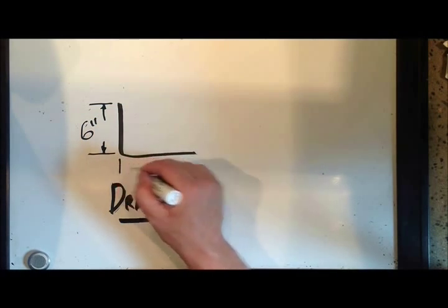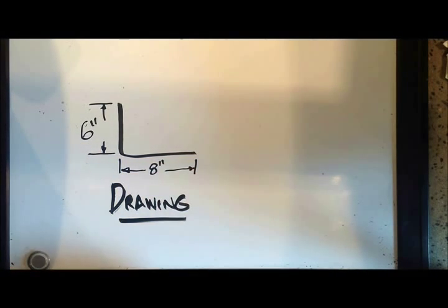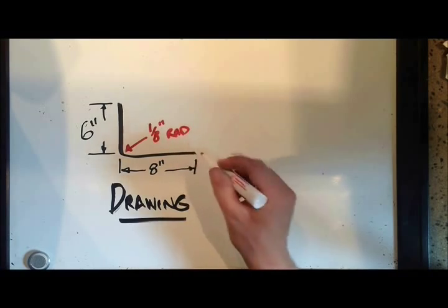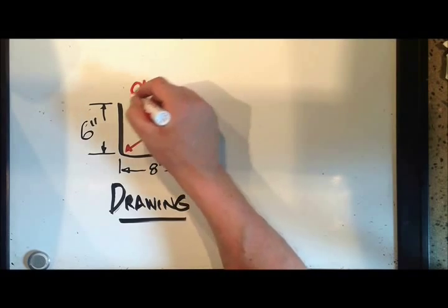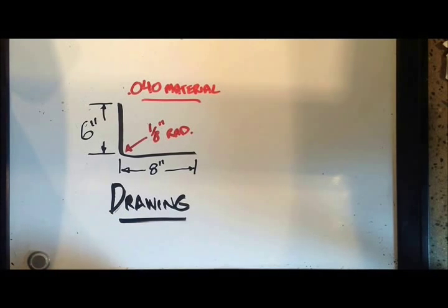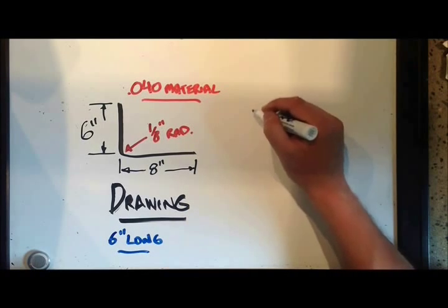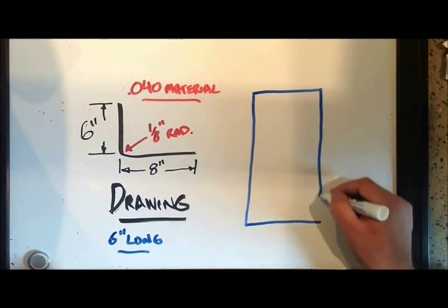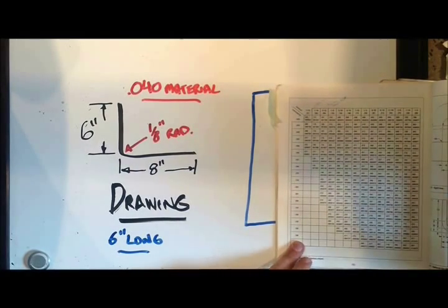When you get a drawing of a piece of material that they want you to bend up, they'll give you specifications. In this case six inches on one leg, eight inches on the other leg, and those dimensions are from the end of the piece of metal to the flat on the opposing side. We can see that we have a one-eighth radius that we're going to bend the material around and we'll be using 040 or 40 thou aluminum. We're going to make it about six inches wide. But the main one that we're concerned with are the two legs that need to be bent and around what sort of a radius we're going to use.